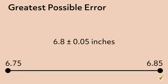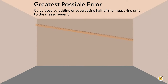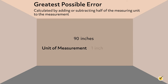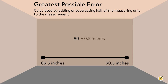The greatest possible error, also called the maximum possible error, is calculated by adding or subtracting half of the measuring unit to the measurement. For instance, let's say you measure the length of a wall to be 90 inches. The unit of measurement is 1 inch, so the greatest possible error is one-half of 1 inch, or 0.5 inches. In other words, any measurements in the range of 89.5 inches to 90.5 inches are considered valid. The tolerance interval is written as 90 ± 0.5 inches.